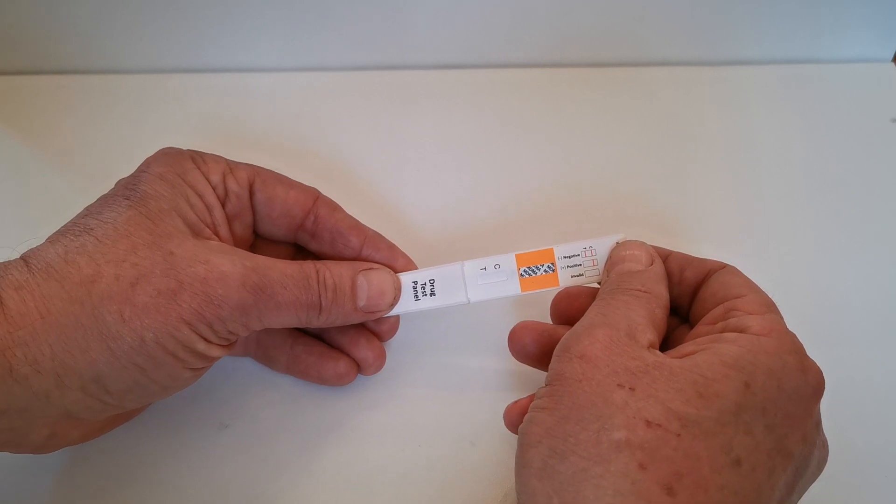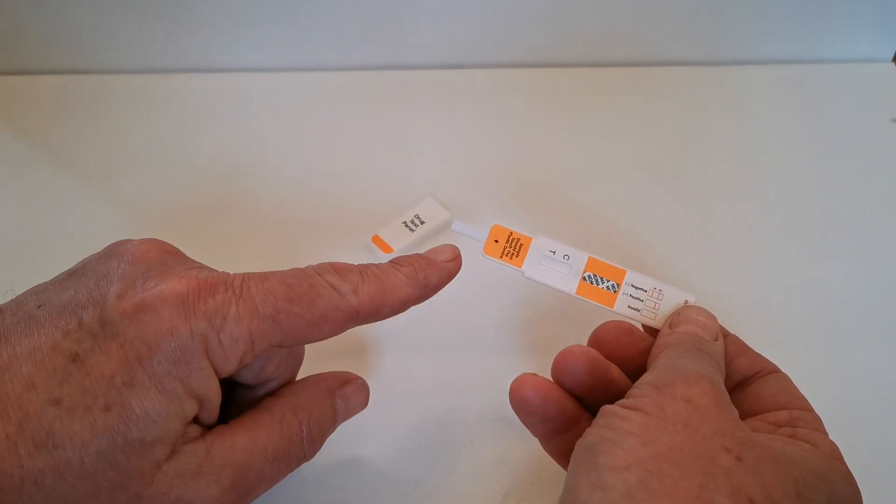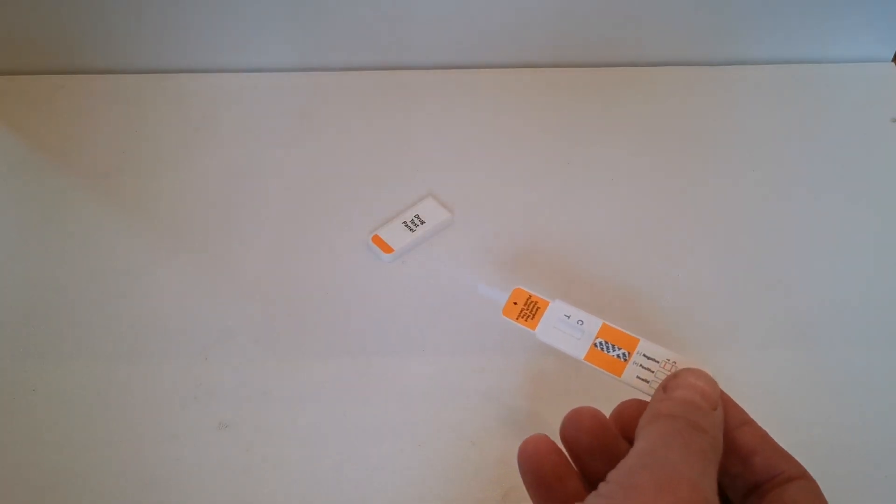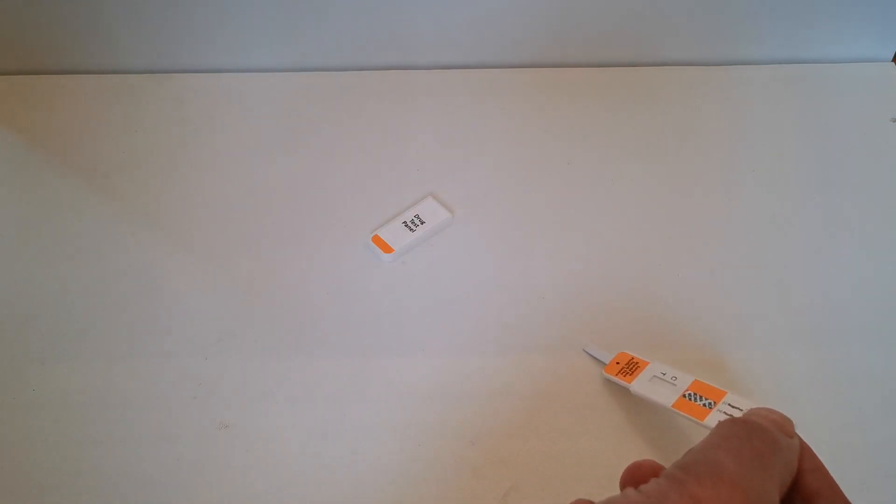To run the test, remove the cover, and this is the drug test cover. What is revealed is this prong. Now to use this as a surface wipe test, all you have to do is wipe the prong across the surface that you're looking to screen.